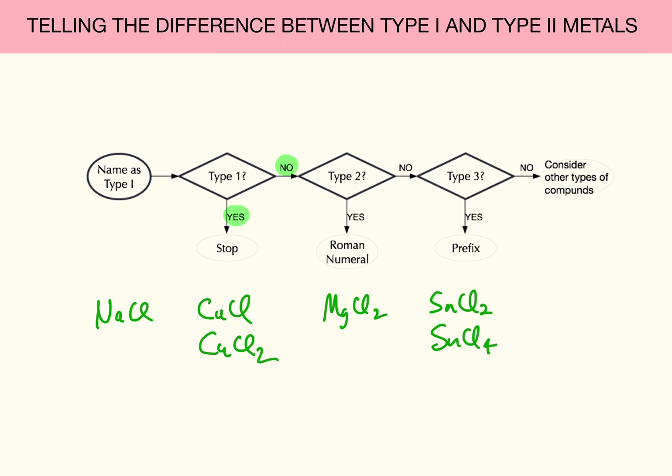Well, that comes from being able to know a Type 1 metal from a Type 2 metal. Compounds made from Type 1 metals have only one flavor. Compounds made from Type 2 metals have two or more.